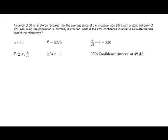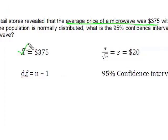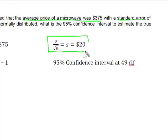I'm going to work this problem that has given everybody such fits. I have a survey of 50 retail stores, and that survey revealed the average price of a microwave was $375 with a standard error of $20. I'm going to assume normal distribution. I want a 95% confidence interval to estimate the true cost of a microwave. Gathering information: N is 50, x-bar is $375, and standard error is $20. The standard error is the exact same thing as S, the sample standard deviation. Since I had S, I immediately go to the T distribution to construct my interval.